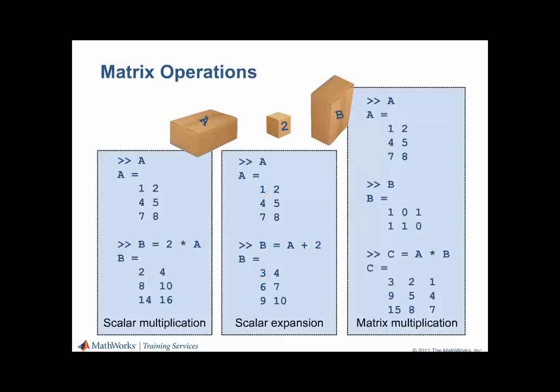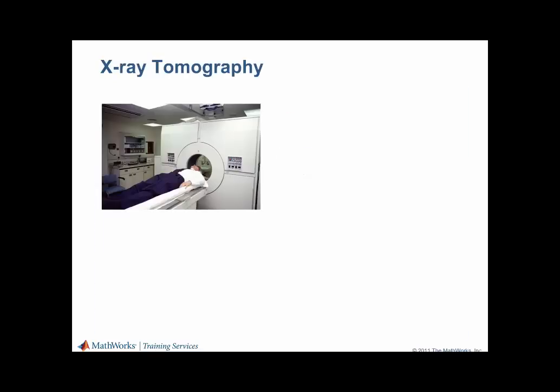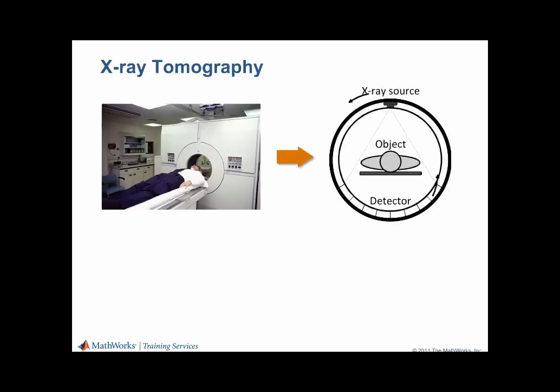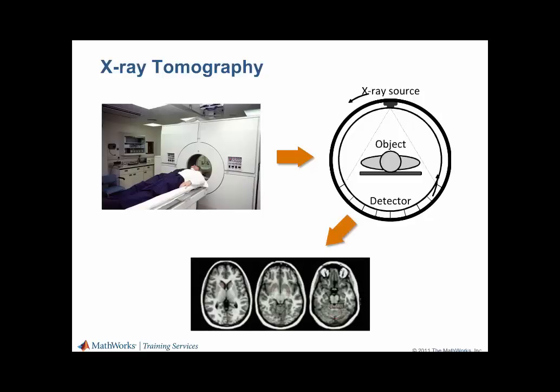Now that we have reviewed the basic matrix operations, let's see how we can apply them to the X-ray tomography example. X-ray tomography, commonly known as computed tomography or CT, is a medical imaging method used to obtain cross-sectional pictures of the body. A series of X-rays are passed through the body around a single axis of rotation. Mathematical processing is then applied according to the geometric location of the ray source with respect to the detector, to generate a two-dimensional image from the measured intensities. Data from multiple two-dimensional images may then be used to produce a three-dimensional volumetric image, also known as a 3D CT scan.